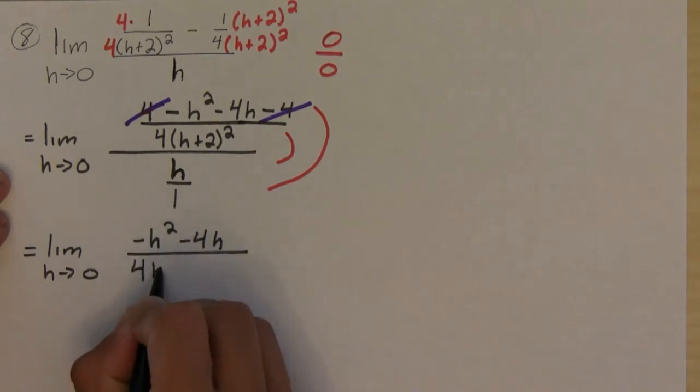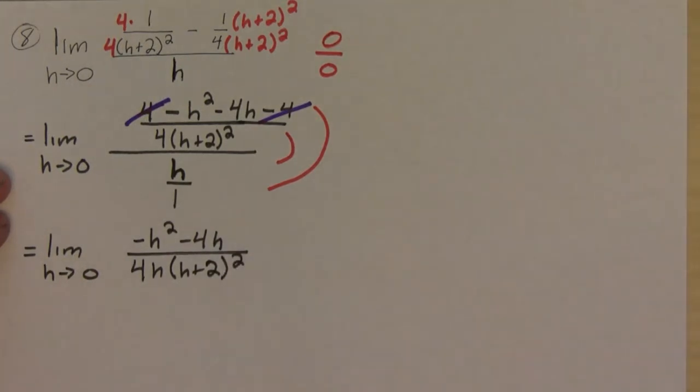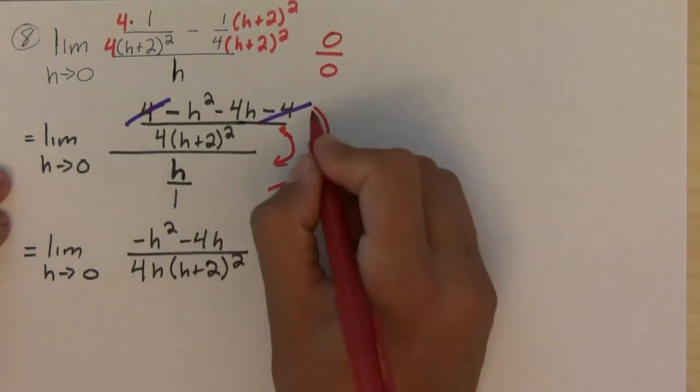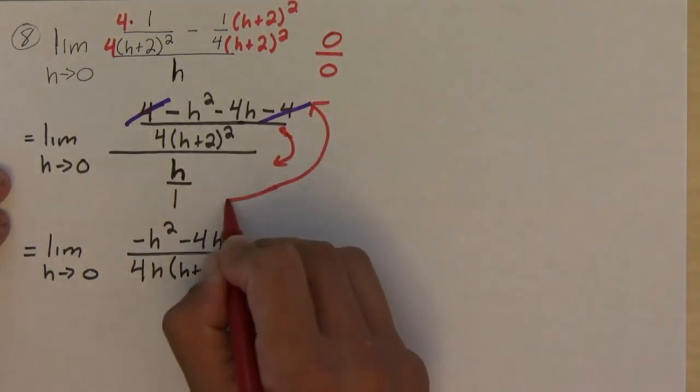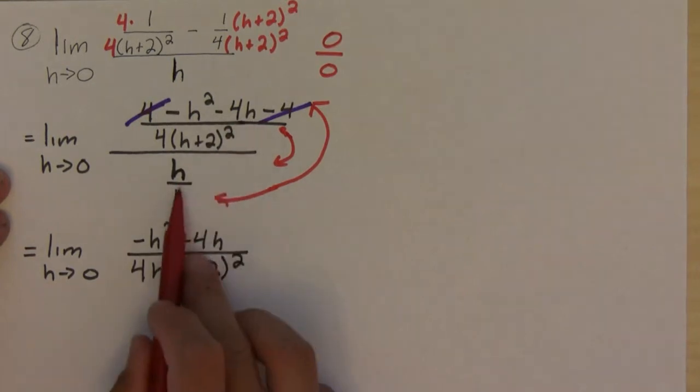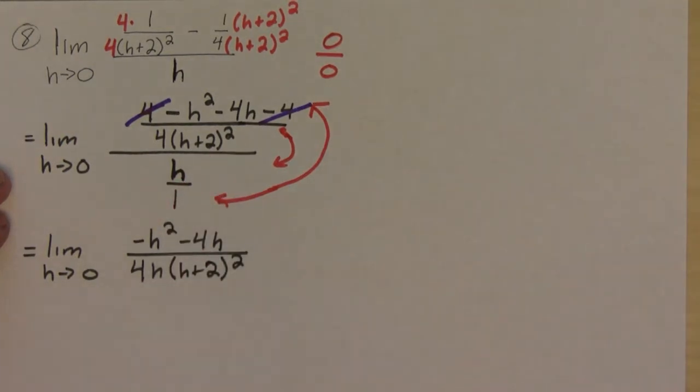Over 4h times h plus 2 squared. And so basically what happened is I multiplied negative h squared minus 4h times 1 that goes on top, and then 4 h plus 2 squared times h goes on the bottom.